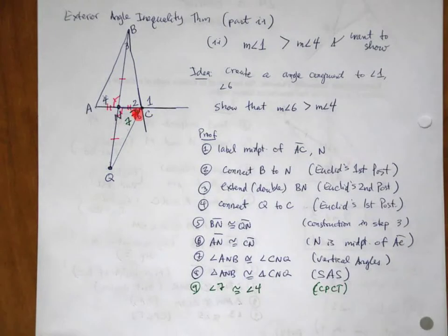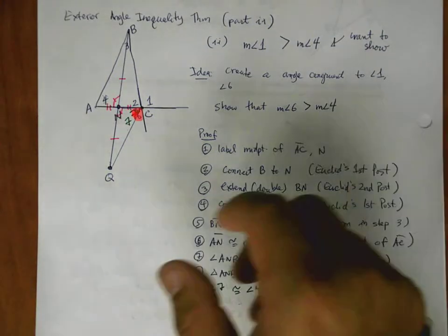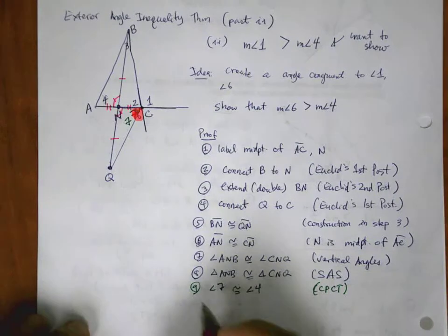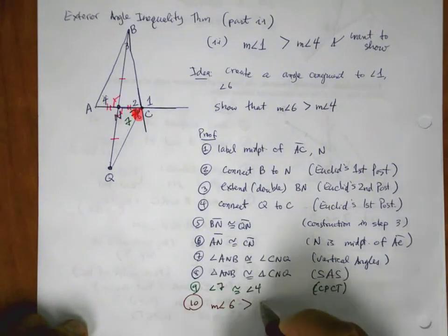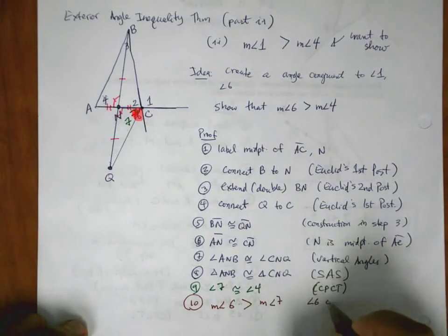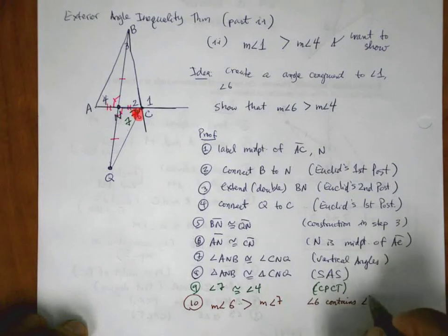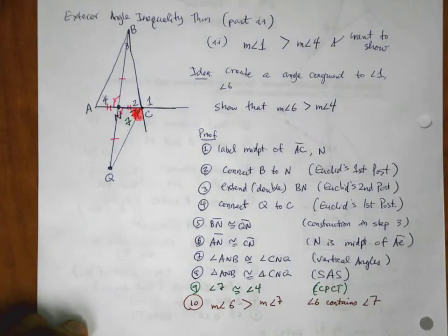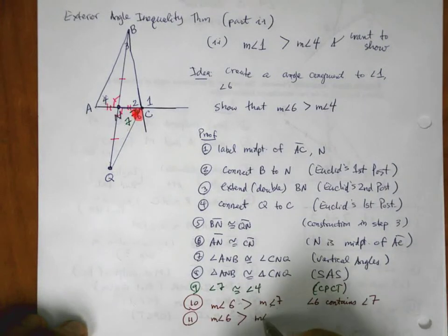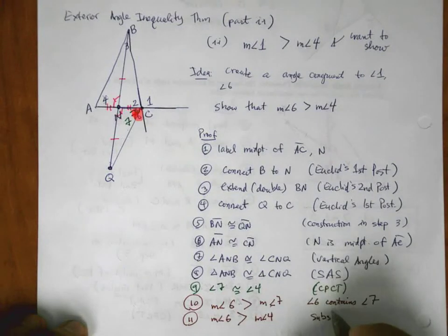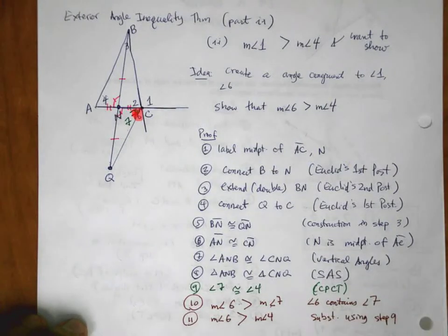But wait a minute. Just like we had before, we can tell that the measure of angle 6 is greater than the measure of angle 7 because angle 6 contains angle 7. But 7 and 4 are the same thing, so that means angle 6 must be greater than angle 4. Substitution. Using step 9.